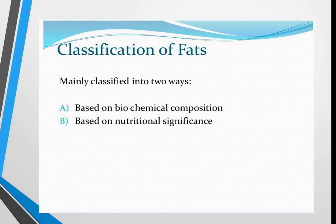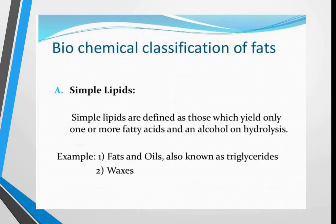Now let's talk about classification. Fats are mainly classified in two ways: based on biochemical composition and based on nutritional significance. Under biochemical composition, the first category is simple lipids, defined as those which yield only fatty acids and an alcohol on hydrolysis. Examples include fats and oils — also known as triglycerides — and waxes.